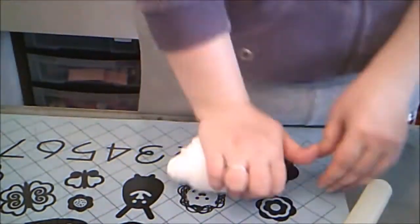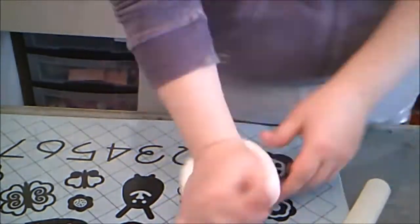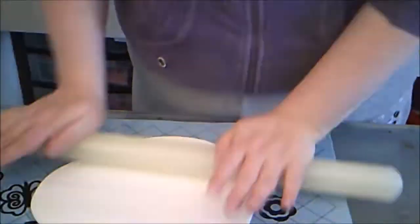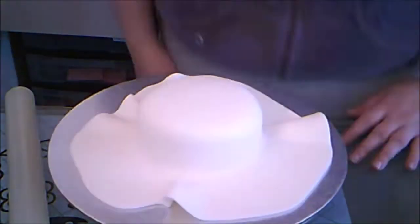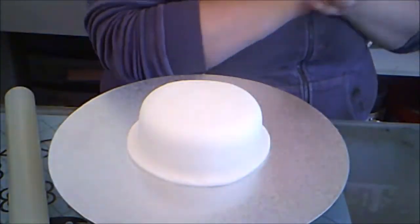Then I rolled out some white fondant and covered the cake with it. I trimmed off the excess fondant with a knife.